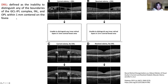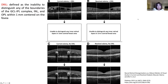This shows DRIL — where we can't distinguish the boundaries of the retinal layers. You have to know your layers of the OCT. This is showing examples where you've got this DRIL where individual layers cannot be distinguished, and that is associated with a worse prognosis for the patient.